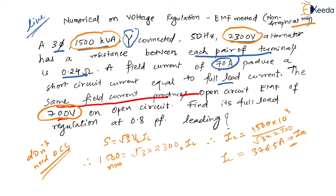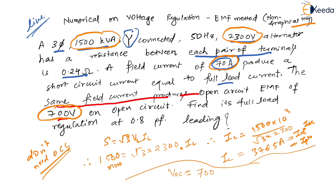This IL = 376.5 A is the rated current, which is also IA (armature current), phase current, and ISC (short circuit current). This short circuit current occurs at a field current of 70 amperes. Now, the open circuit voltage VOC is 700 volts, but that is a line value. For phase value, divide by √3, since all given values are line values unless otherwise specified.